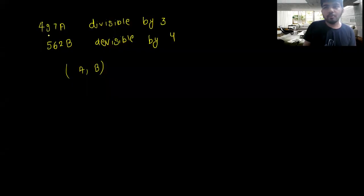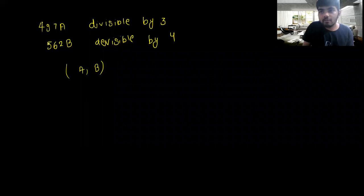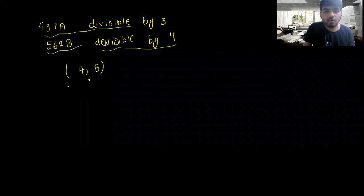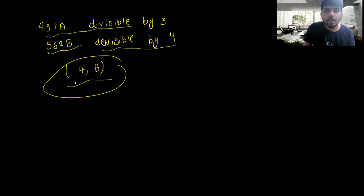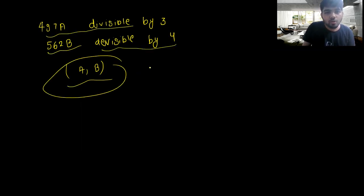The next problem: 497a is divisible by 3 and 560b is divisible by 4. We have to find the number of ordered pairs of (a, b). So here 497a is divisible by 3.